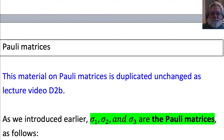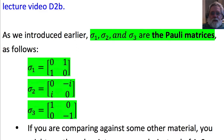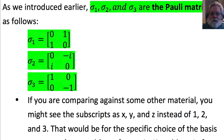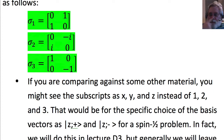Pauli matrices. We introduced them earlier: sigma 1, 2, and 3. If you're comparing against other material, you might see the subscripts as x, y, and z instead of 1, 2, and 3. That is true for the specific choice of basis vectors as z-plus and z-minus for a spin one-half problem, which we will use in lecture D3. But here we're talking about general generic two-state systems, so we should stick with 1, 2, and 3, not x, y, and z.